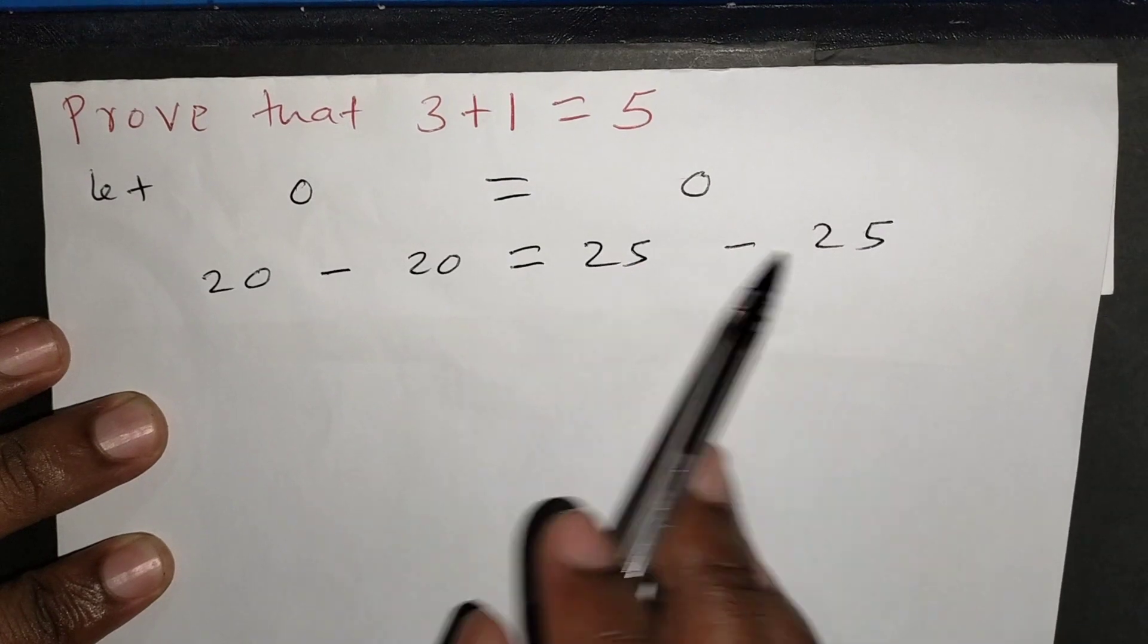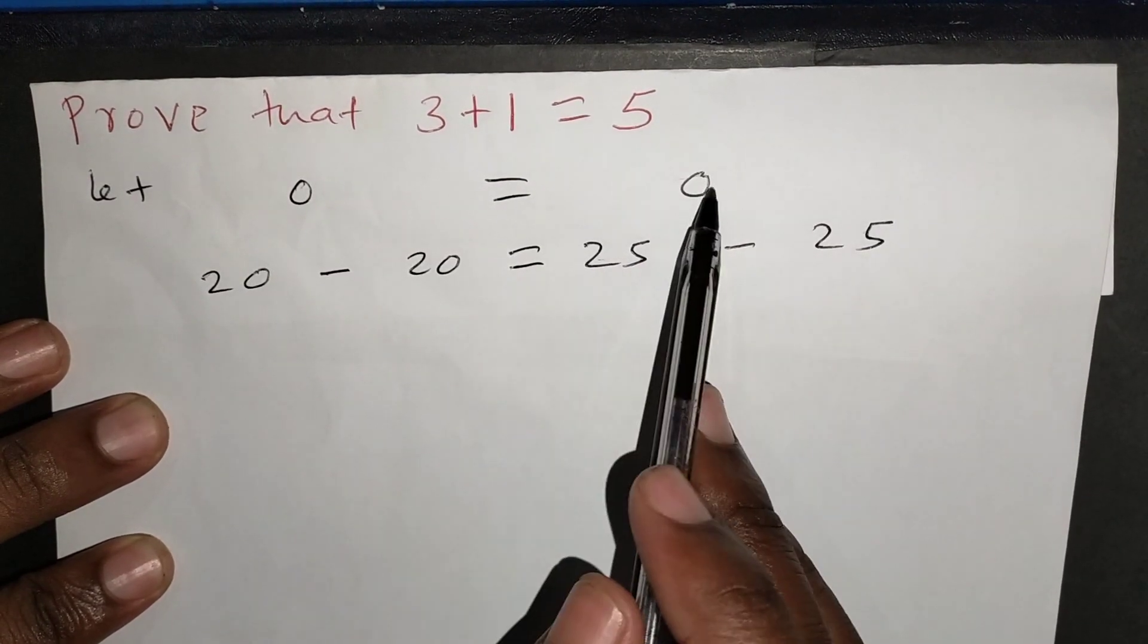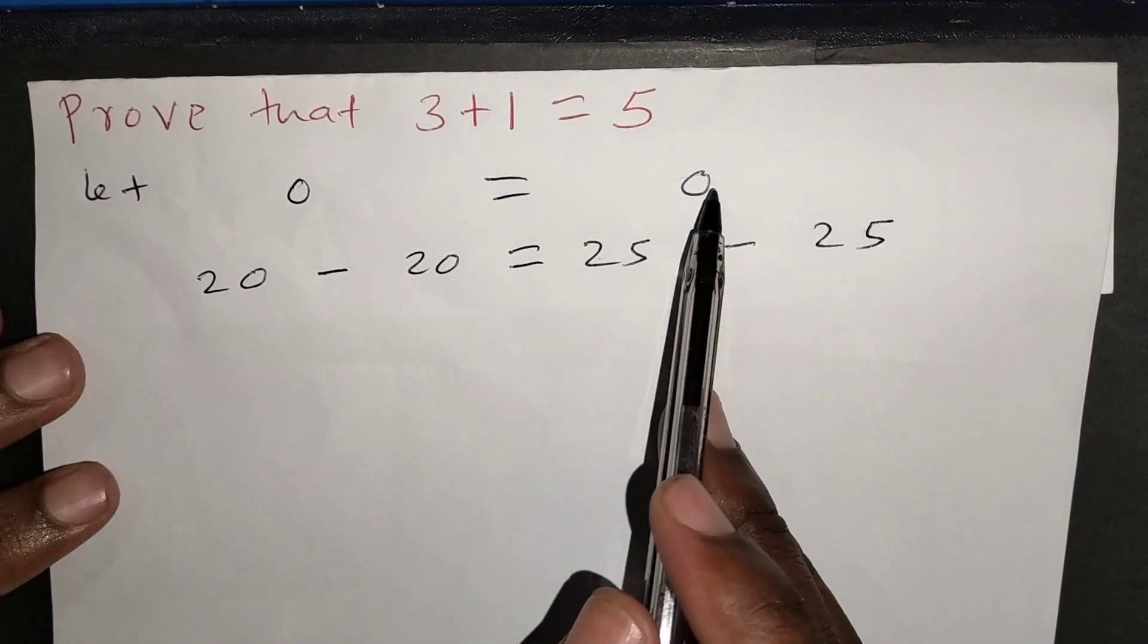Again, we know that this is mathematically true. If you take 25 minus 25, you're actually going to obtain 0.